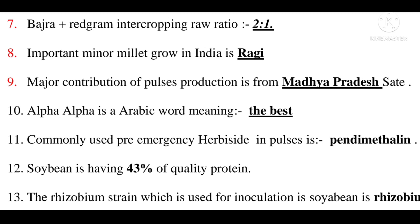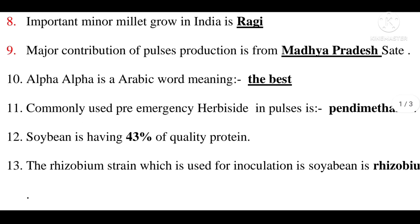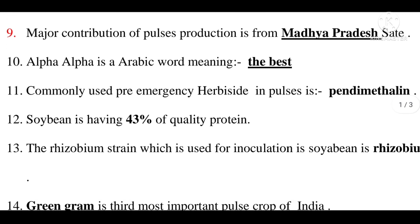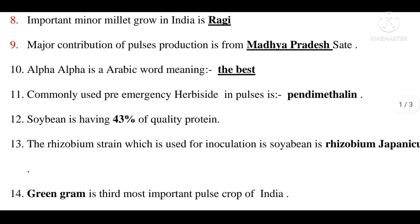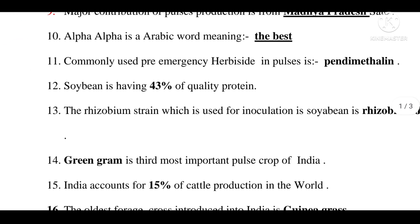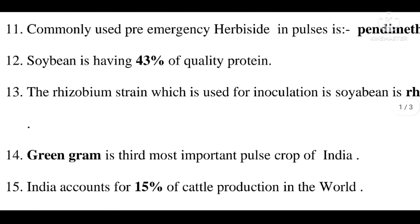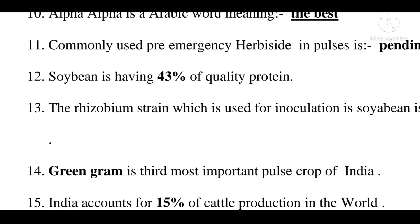Soybean is having high protein content. The Rhizobium strain used for inoculation in soybean is Rhizobium japonicum, which is used for the most important pulse crop.